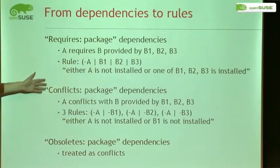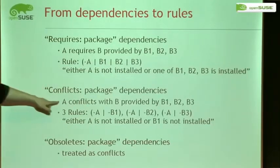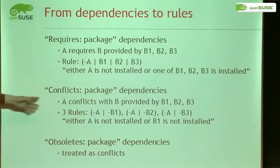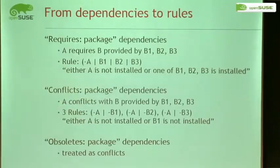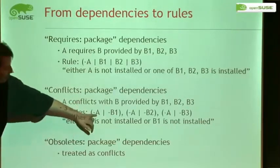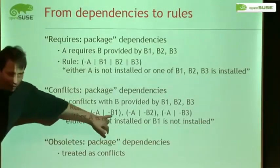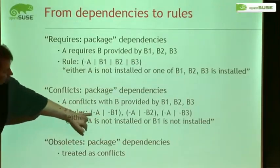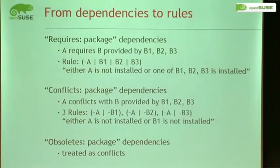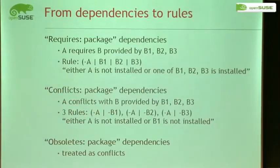Same with conflicts. If I have a conflict dependency — A conflicts with B, and B is provided by B1 and B2 — the translation is three rules: (not A or not B1), (not A or not B2), (not A or not B3). This is true if either A is not installed or B1 is not installed, and only false if both are installed — which is exactly what the conflict says.